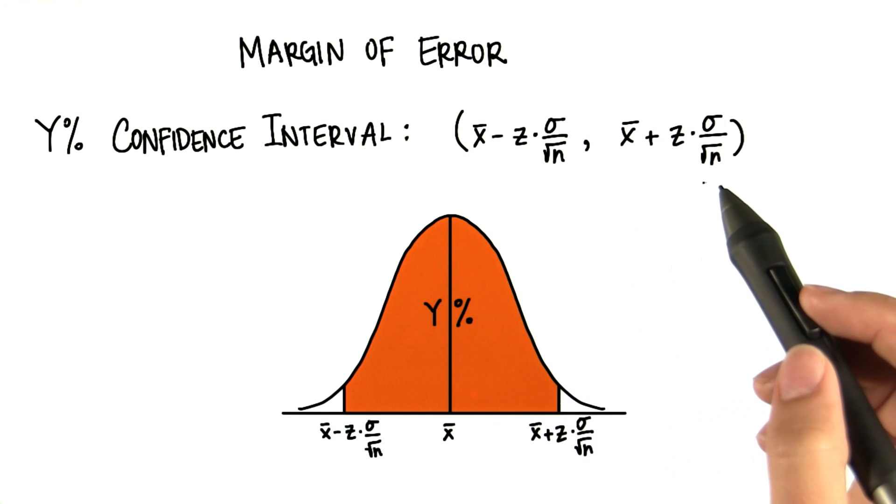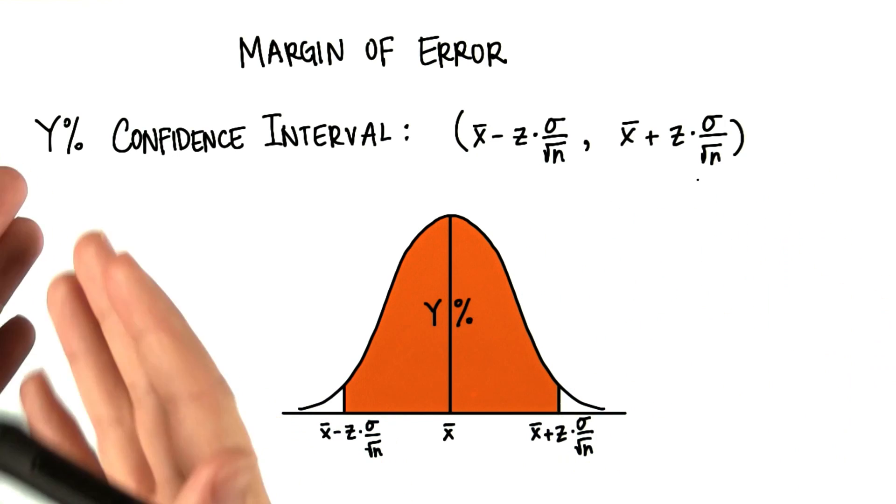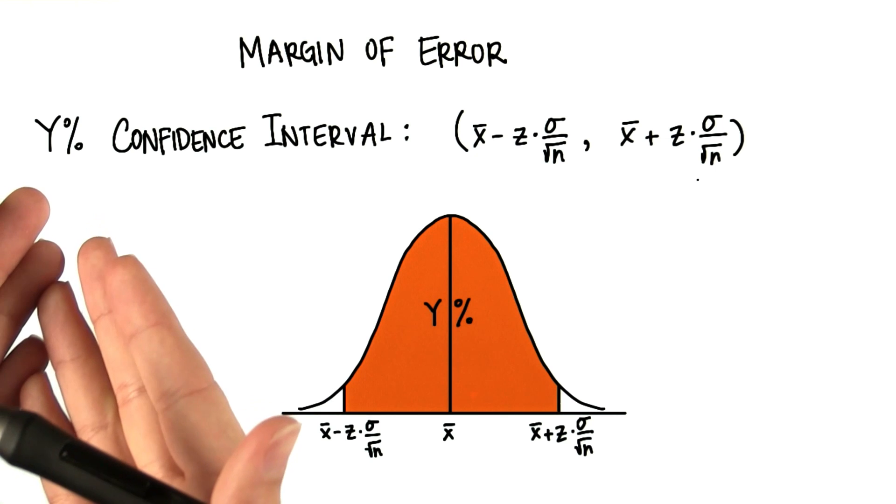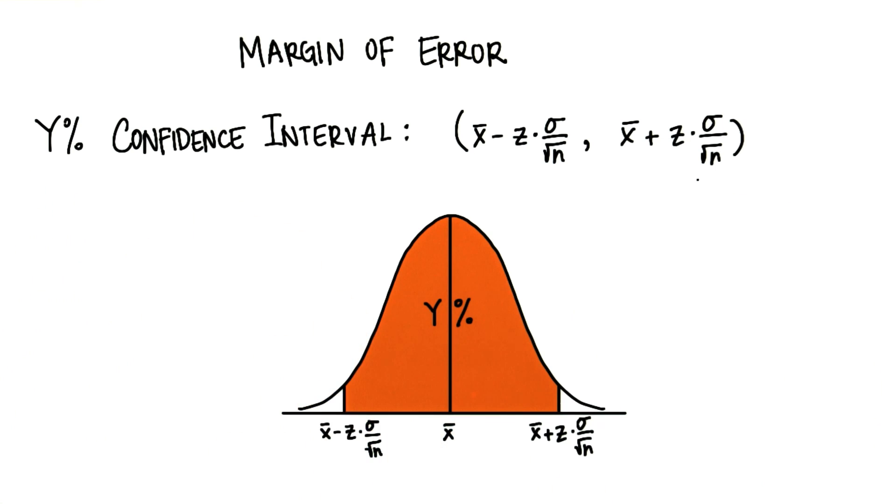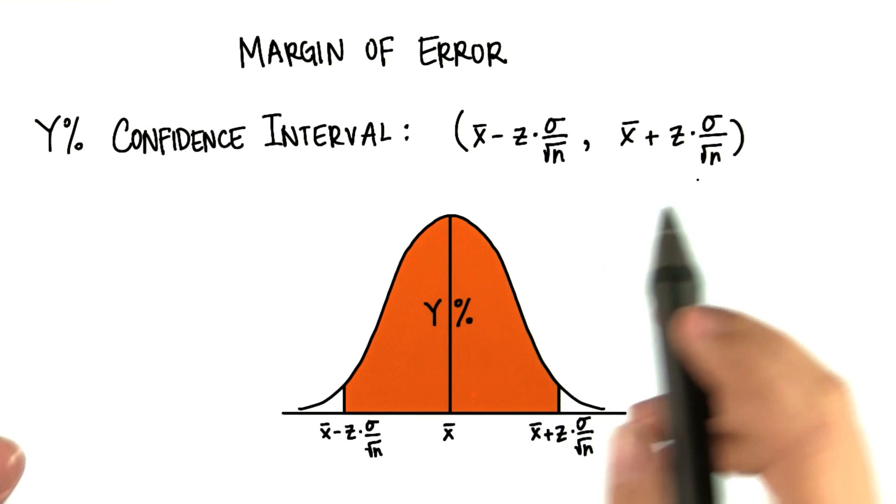Now we have our general form of the confidence interval. So for some y percent confidence interval, this could be 95%, 99%, anything really. Usually it's somewhere in the 90s.